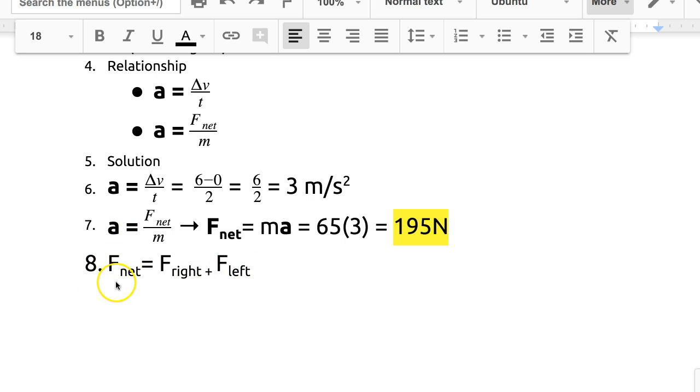We know the net force equals 195 newtons. We know 5 newtons of force oppose the motion, so that's why there's the negative. It's the opposite of the direction of motion. So we know 195 equals the force to the right plus negative 5, so the overall force to the right must be 200 newtons. So that's how we calculated the net force, and then figured out for the force diagram what the force is to the right.